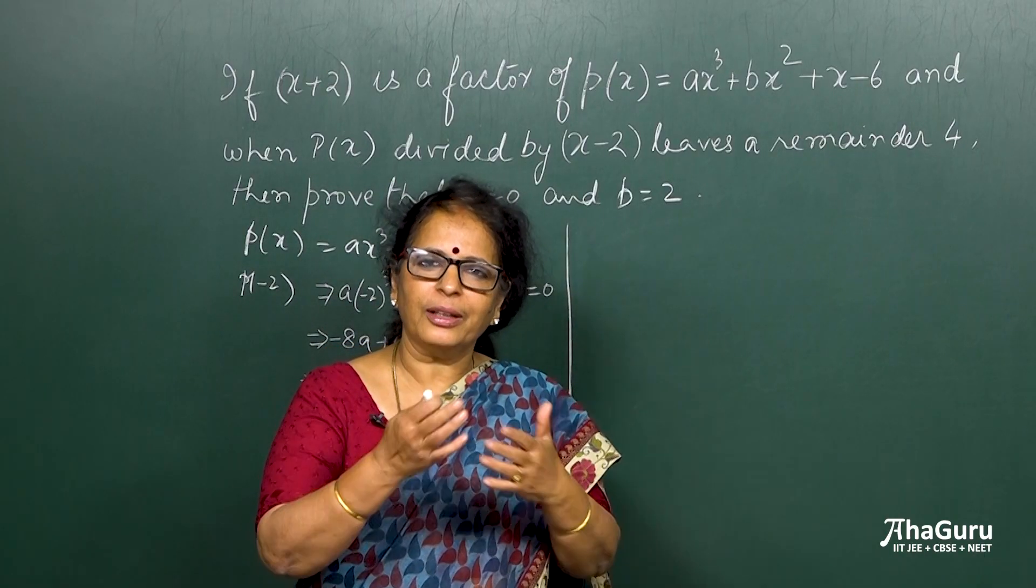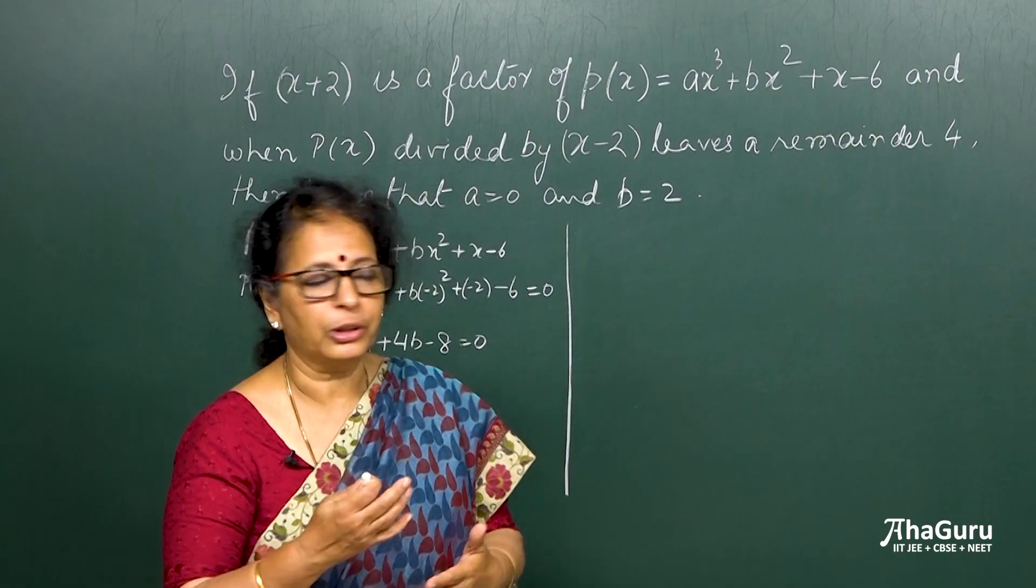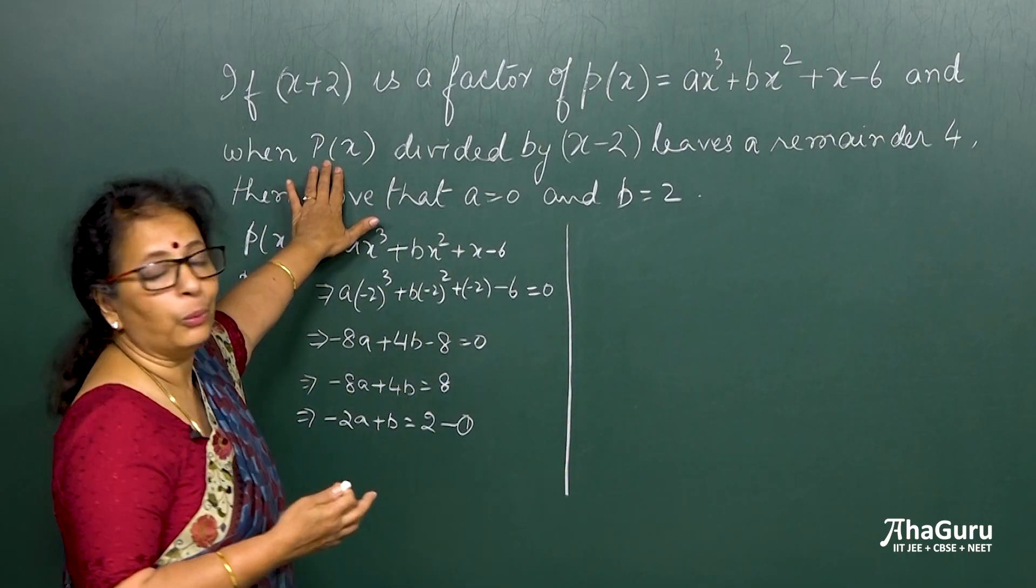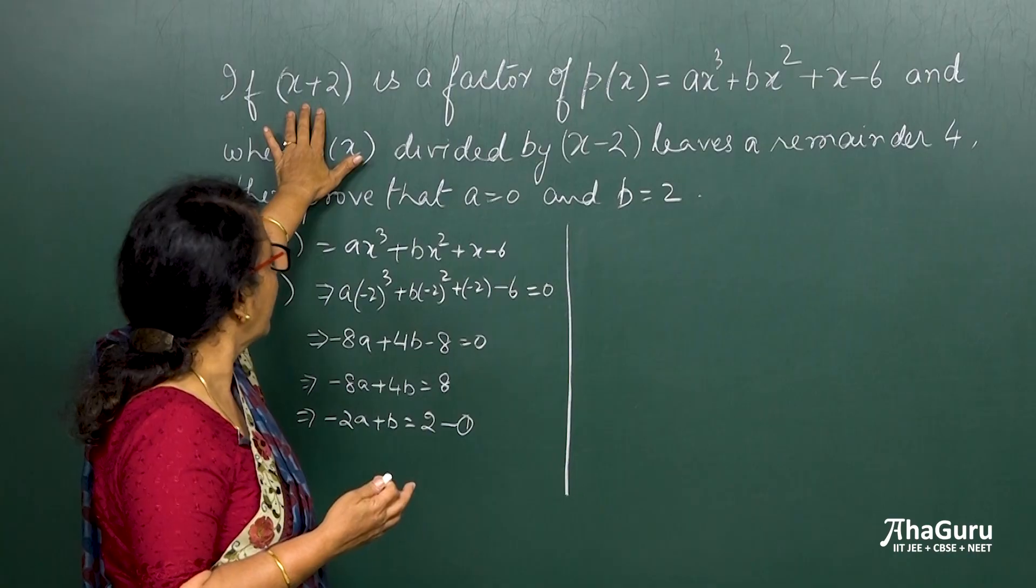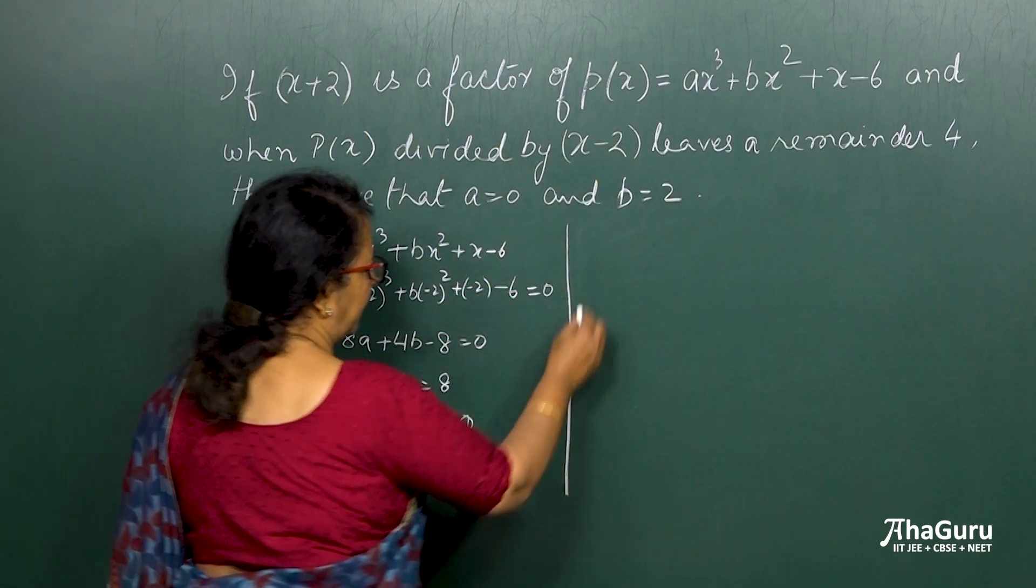So you have to be careful in looking at which factor belongs to which remainder and all that. But here, thank God, there is only one polynomial. One is a factor and one is a remainder.